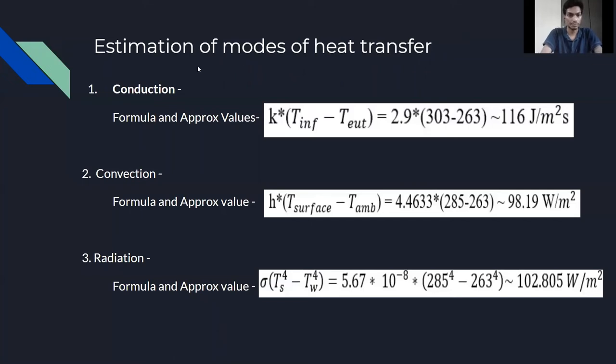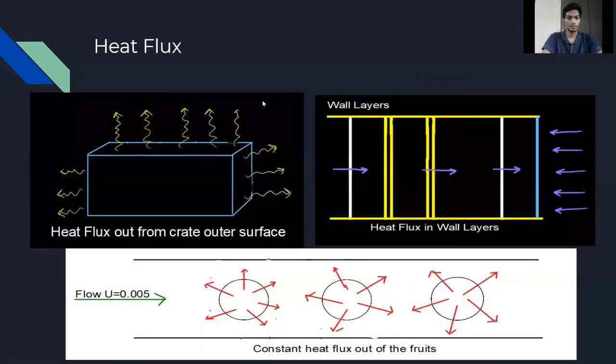Estimation of modes of heat transfer. For conduction, this is the formula and the approximate value comes out to be 98.19 watt per meter square. For radiation, this is the formula and the approximate value is 102.805 watt per meter square. For heat flux, control volume can be viewed as the following and heat flux follows the path which are shown by the direction of the arrows for both wall and dynamic cooler.